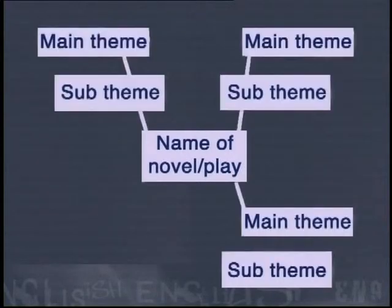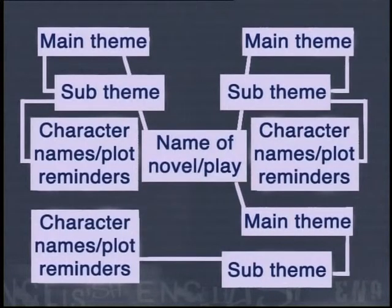To recap on how to construct a mind map: write down the name of the play or novel, map the main themes around this, write down subthemes for each main theme, and write down characters' names or plot reminders for each subtheme. Once you have drawn and memorised your mind map, you can redraw it in a test or exam, and each point will remind you of details you have studied. This is why it's impossible to study from somebody else's mind map — they will be reminded of their particular details, but you might not.